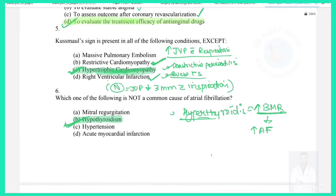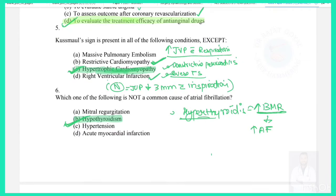Question 5: Kussmaul sign is present in all the following conditions except — Kussmaul sign is present in constrictive pericarditis, severe tricuspid stenosis, massive pulmonary embolism, restrictive cardiomyopathy, and right ventricular infarction, but not in HOCM (hypertrophic obstructive cardiomyopathy). Normally JVP decreases with inspiration by 3 mmHg, but Kussmaul sign is an increase in JVP with inspiration.